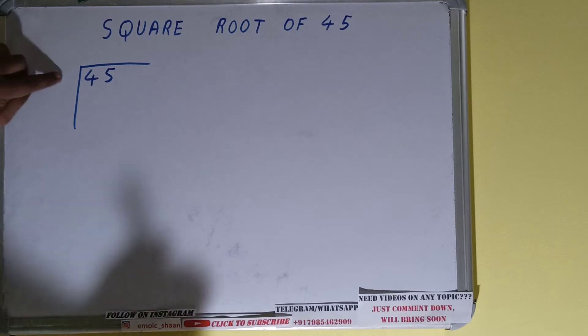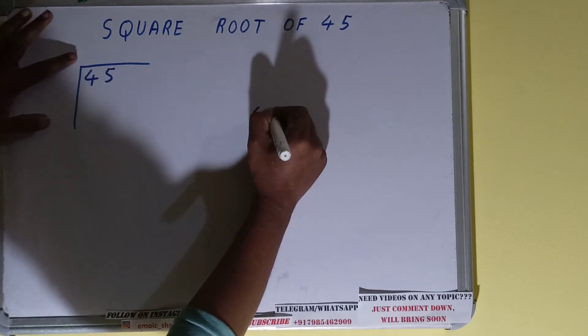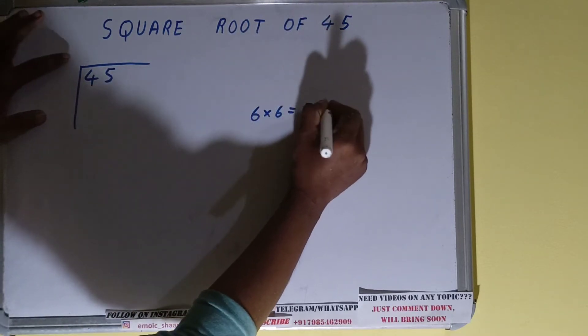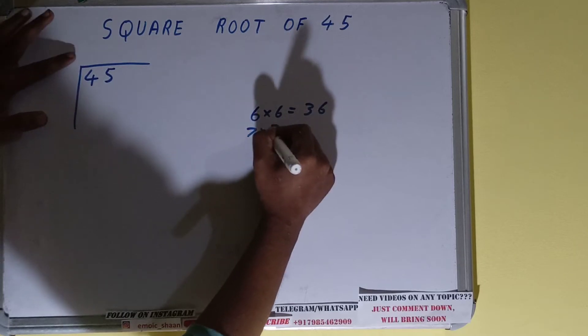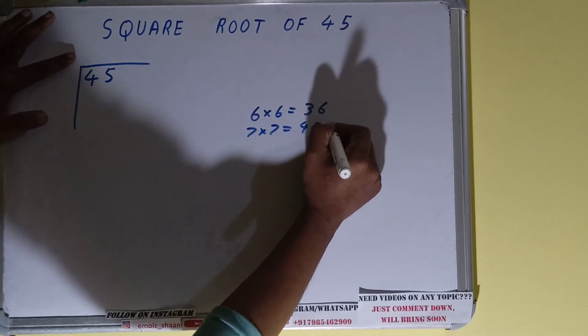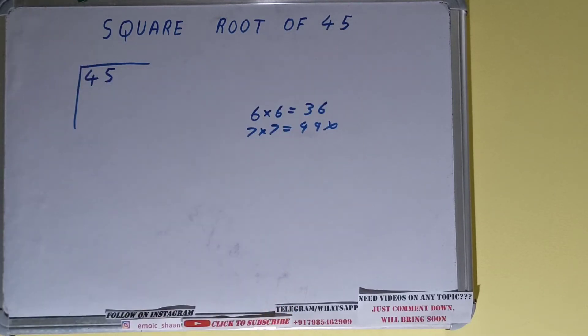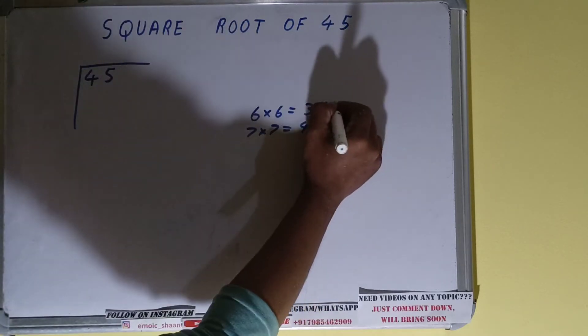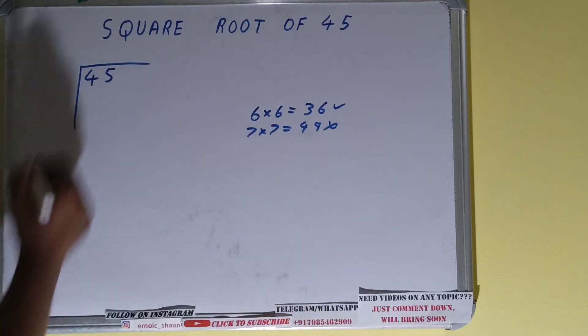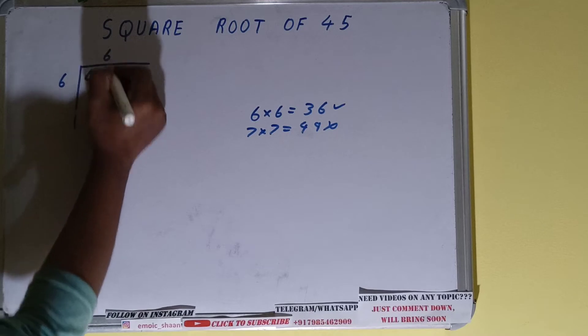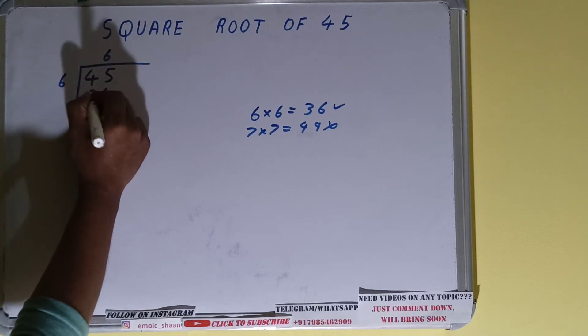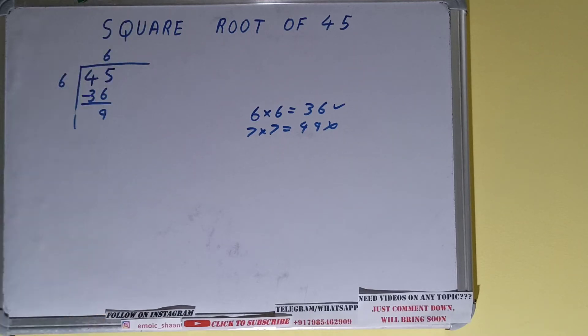So if we take 6 here we have to take 6 here also, that will give 36. If we take 7 here we have to take 7 here also, that will give 49. So we cannot take this because 49 is greater than 45. We have to take this one. Okay, so 6 here and 6 here, that gives 36. Subtract it, left with 9.